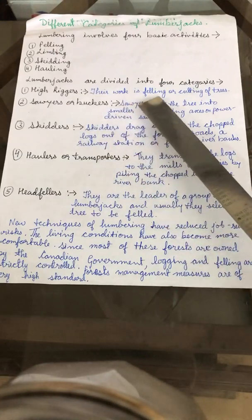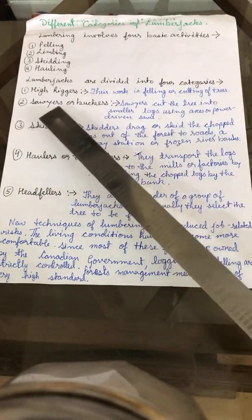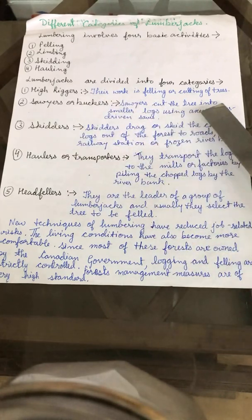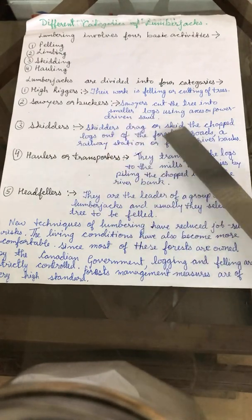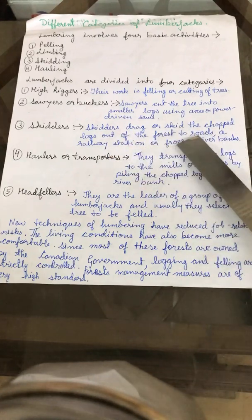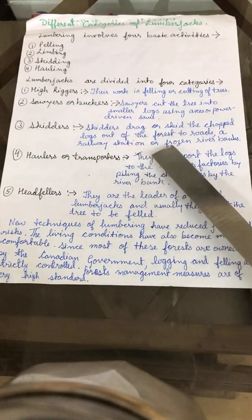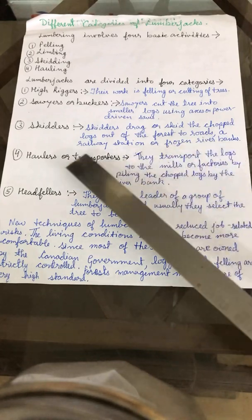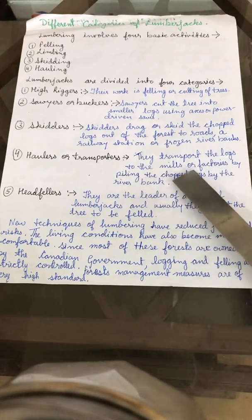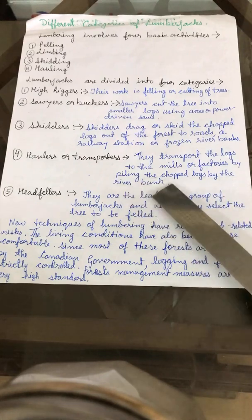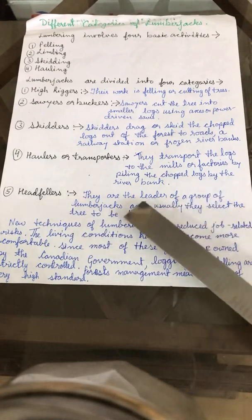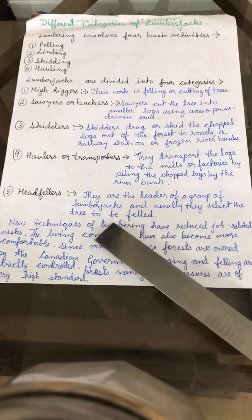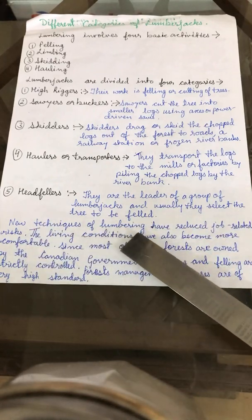Lumberjacks are divided into four categories: high riggers, whose work is felling or cutting of trees; sawyers or buckers, who cut the trees into smaller logs using axes or power-driven saws; skidders, who drag or skid the chopped logs out of the forest to roads, railway stations, or frozen river banks; and haulers or transporters, who transport the logs to the mills or factories by piling the chopped logs by the river banks. Head fellers are the leaders of the group of lumberjacks and usually select the trees to be felled.